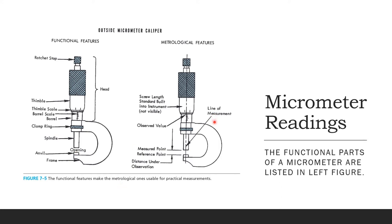Looking at micrometer readings, the functional parts are on one side and the metrological features on the other. Here is your ratchet stop and the head of your micrometer. The thimble is the rotating part with the thimble scale. The barrel has the barrel scale. Other parts include the clamp ring, spindle, anvil, and the frame. The opening is where you place the parts to be measured.